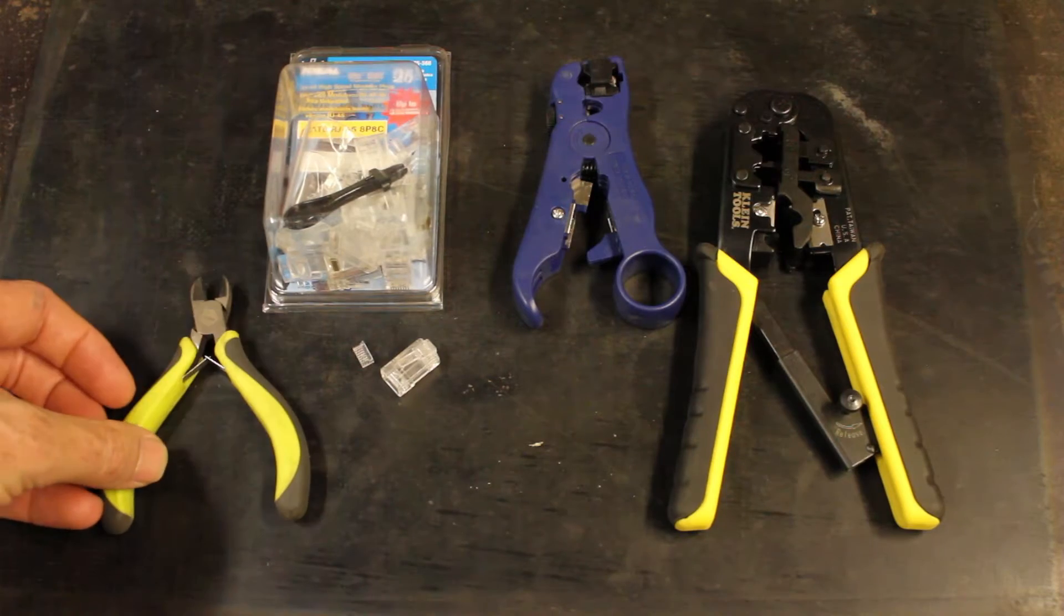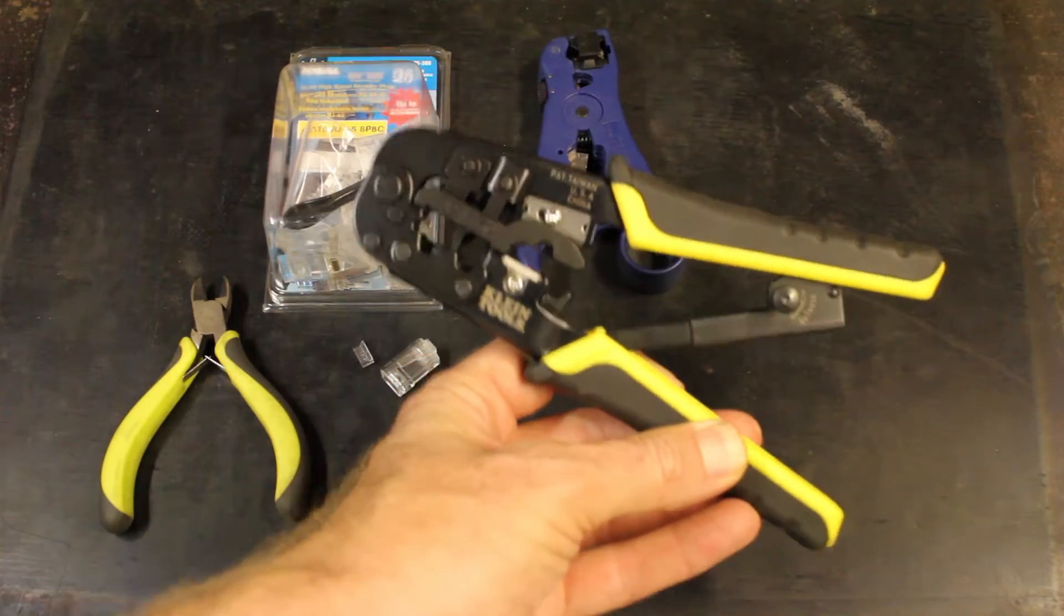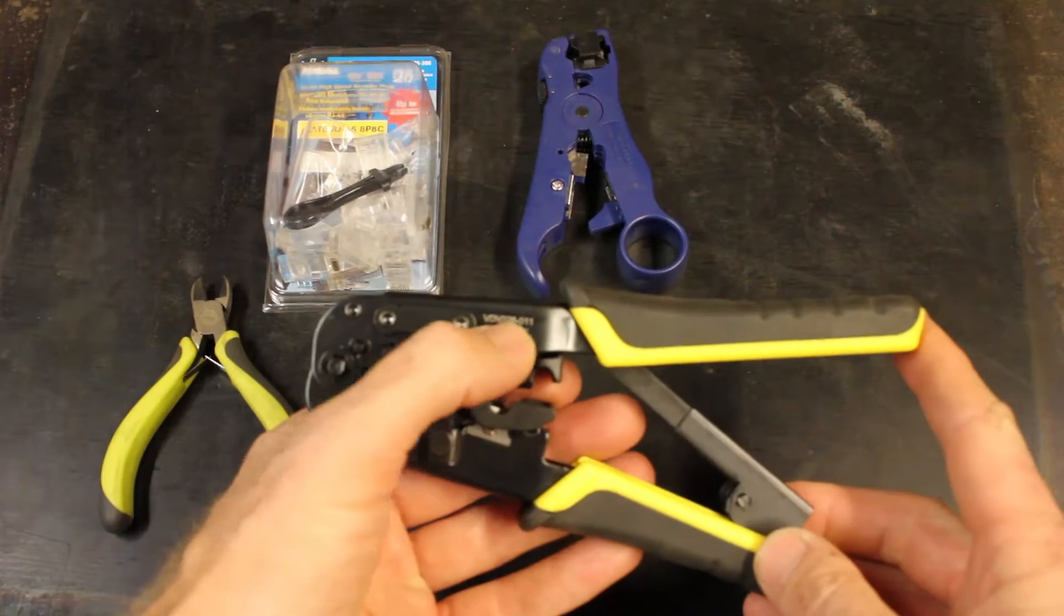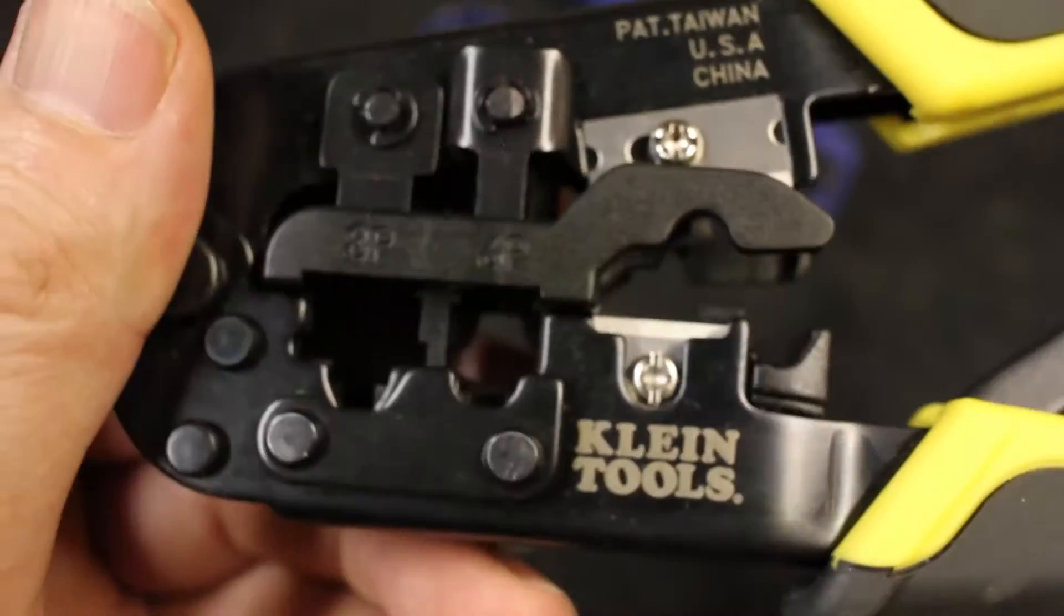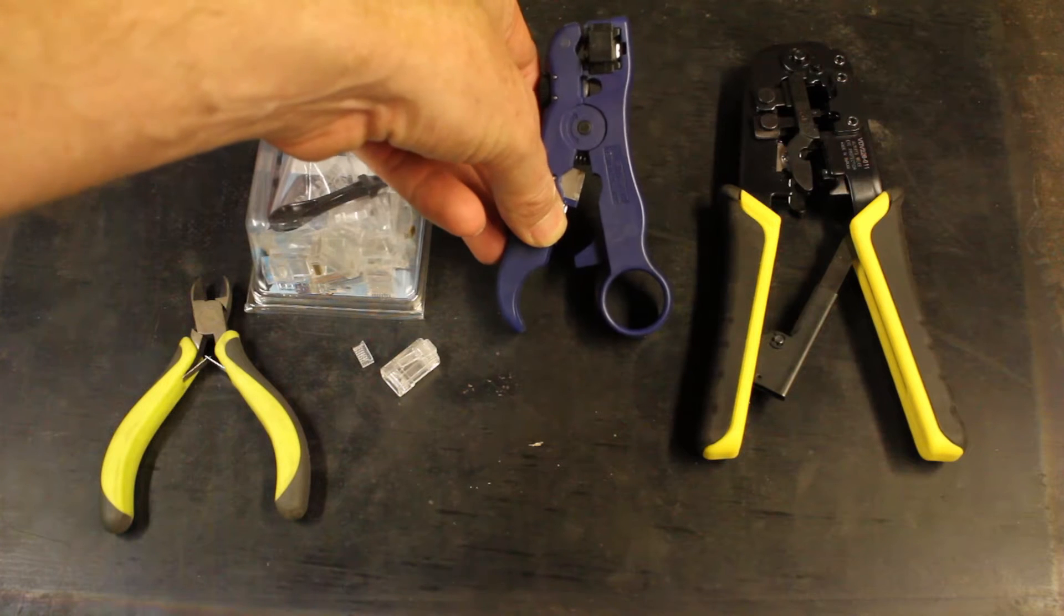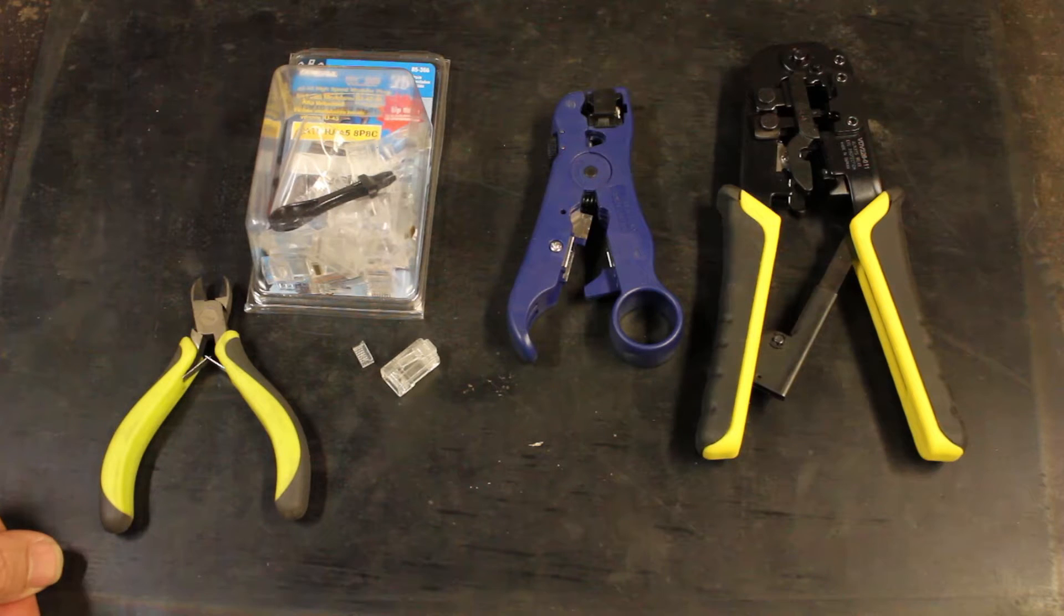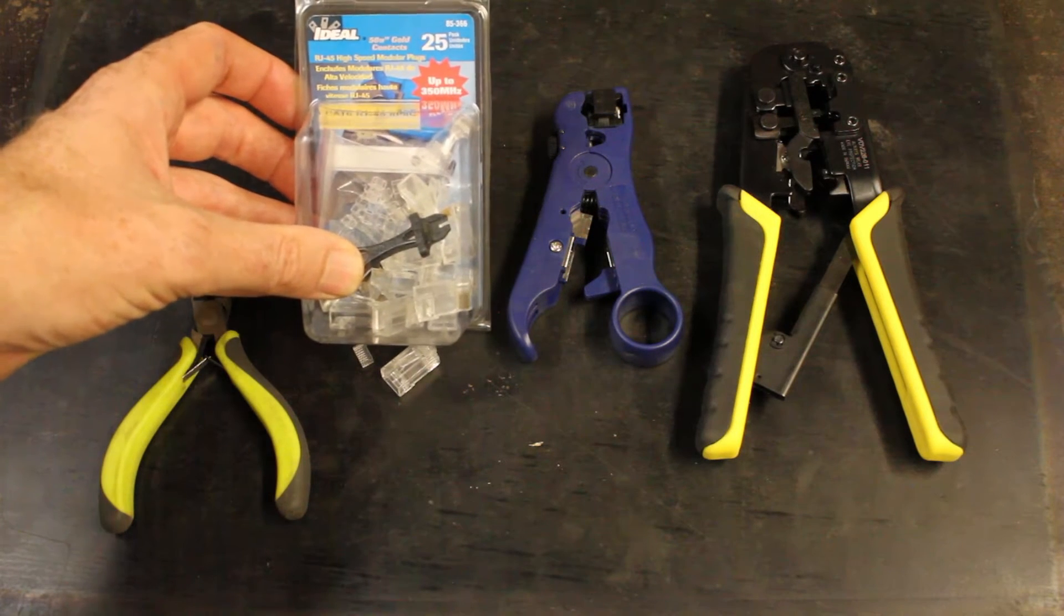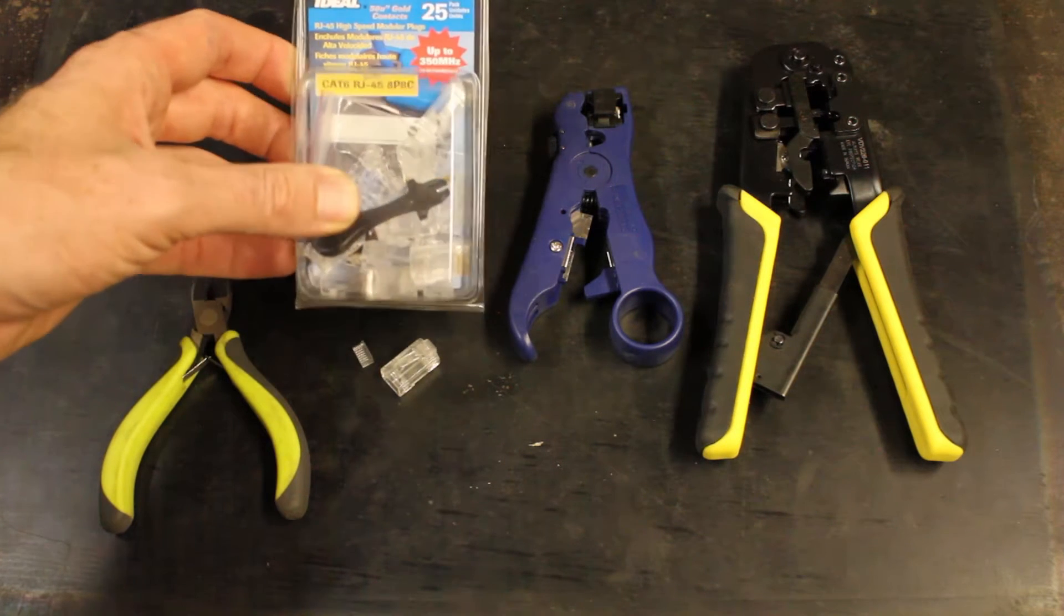Basically what you'll need is a pair of wire snippers, an Ethernet cable end installation tool - this one I got from Home Depot, it's made by Klein, part number VDV226-011, you can find it in their Ethernet section. And this is just a wire stripper specifically for Ethernet cable, so you don't have to have that but it makes it quicker. And then Ethernet cable ends - this is CAT6 RJ45 cable end connectors.